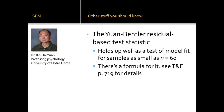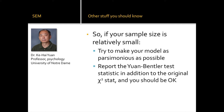Some strategies for small samples: first, make your model as parsimonious as possible in advance — the more parameters you add, the more sample size you theoretically need. Second, report the additional Yuan-Bentler test statistic. If your independent variable is discrete or categorical (like a 0/1 gender variable), you don't need to do anything special — it's a general linear model at that point.